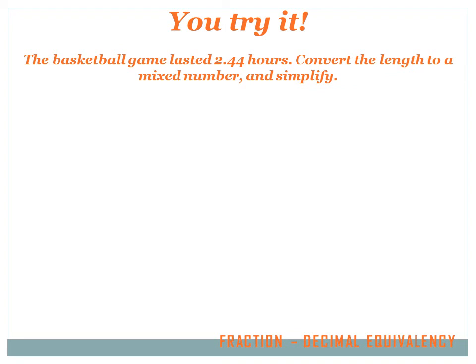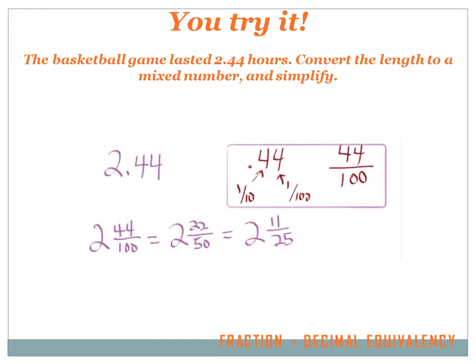The basketball game lasted 2.44 hours. Convert the length to a mixed number and simplify. Let's see, can we convert 2.44 into a mixed number? I think we can. First, let's pull out that .44 and convert it into a fraction. All right. To convert it into a fraction, I take the digits, .44, and put it over the place of the last digit. Well, the last digit's in the hundredths place, so it's 44 over 100. Now, I take that 44 over 100 and I tack it on to the 2. I replace the .44 with 44 over 100 and I've got 2 and 44 one-hundredths.